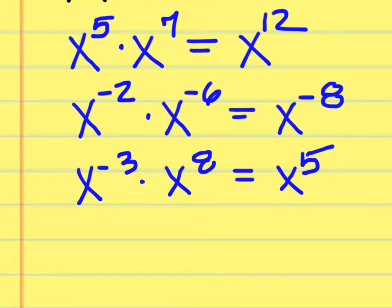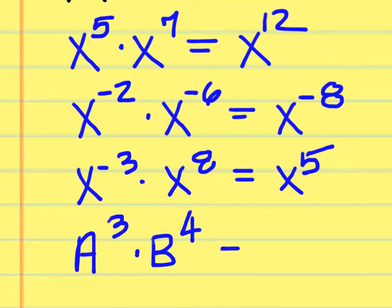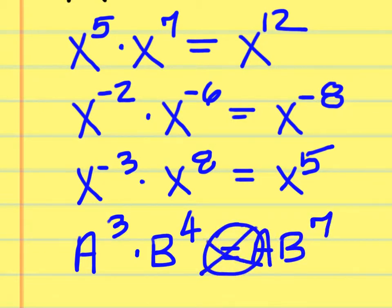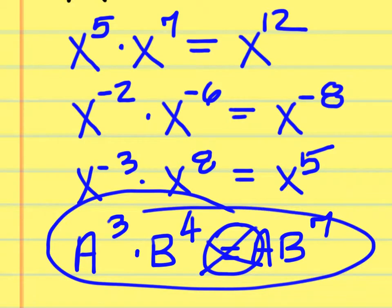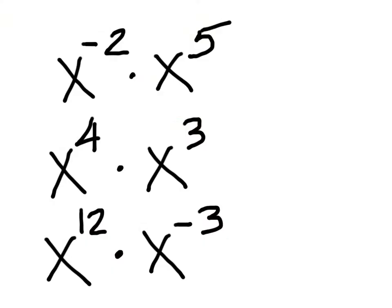Important: if you had something like a to the 3rd times b to the 4th, that is NOT a·b to the 7th — that does not work. You can only add exponents when the bases are the same: two x's, two a's, two b's, and so on.